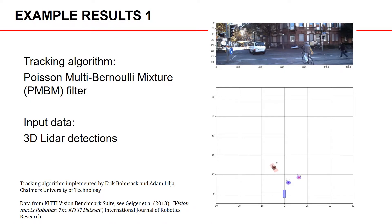Let's have a look at some example tracking results from an urban environment. In the video we will show, we have used a tracking algorithm called Poisson Multi-Bernoulli Mixture Filter, or PMBM, and the input data are 3D detections from LiDAR data. On the right we have a bird's eye view of the tracking results, and above it you can see a camera image of the scene.